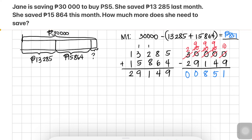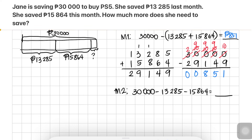Another way to solve this problem, Method 2, is to subtract the savings from each month separately from 30,000 pesos. First, subtract 30,000 minus 13,285 pesos, and then subtract 15,864 pesos from that result.